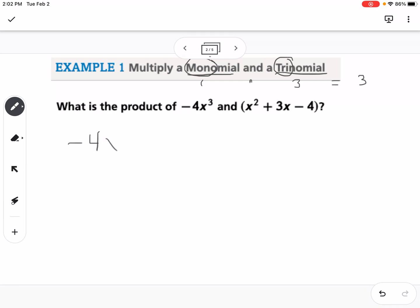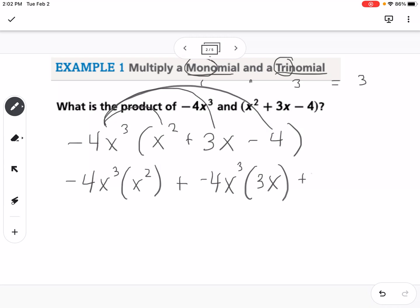We're going to write this as negative 4x cubed times x squared plus 3x minus 4. So we're going to use the distributive property. My first multiplication is these two terms, so I'm taking negative 4x cubed times x squared. Then I'm going to take negative 4x cubed times 3x, then negative 4x cubed times negative 4. Notice I'm keeping that symbol, the minus symbol, as a negative in front of the 4.